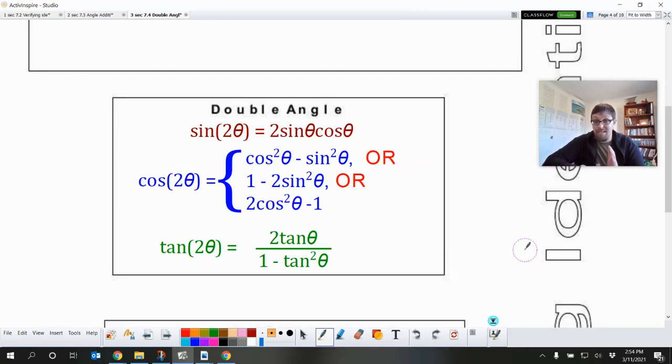So ends our discussion on double angle identities. So keep in mind sine is just a nice easy like 2 sine cosine. So the big 2s are my big hint that it's a double angle identity. Cosine, you get those options. Keep in mind it looks very, very similar to the Pythagorean identity. But cosine and sine are being subtracted instead of being added. And that makes it a whole new identity.